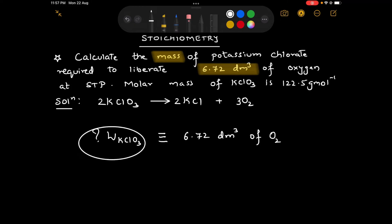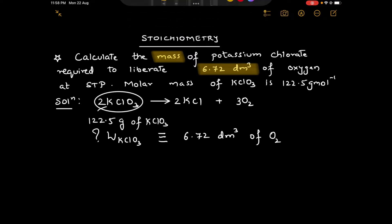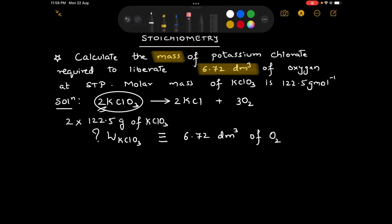Now since we have to find out the mass of KClO3, we will think of the standard mass of KClO3, that is 122.5 grams of KClO3. Referring to the reaction, we have the stoichiometric coefficient as 2, so we will multiply this by 2.